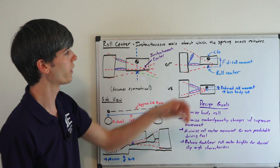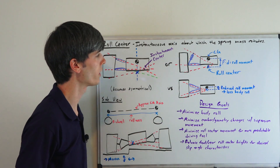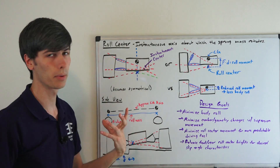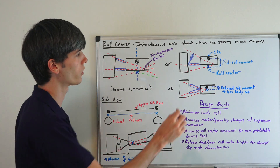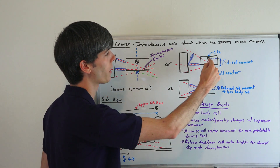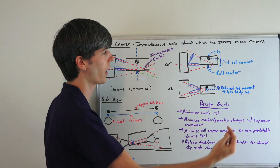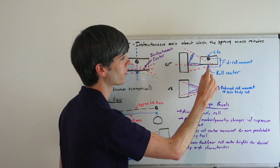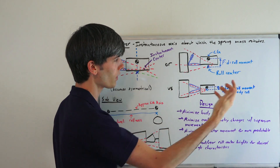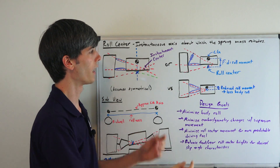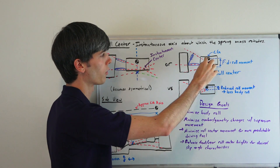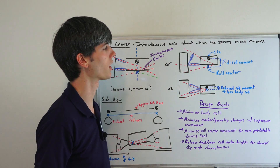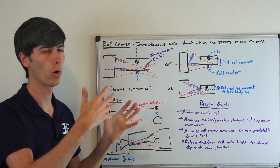The important things to know are: where's the center of gravity, where's the roll center, and the distance between those is going to be your roll moment. As you're going around a corner, the forces are acting on that center of gravity, and you've got a distance between that center of gravity and the roll center. That's your roll moment — force multiplied by distance — so the larger that distance with the same force, the more roll you're going to have.